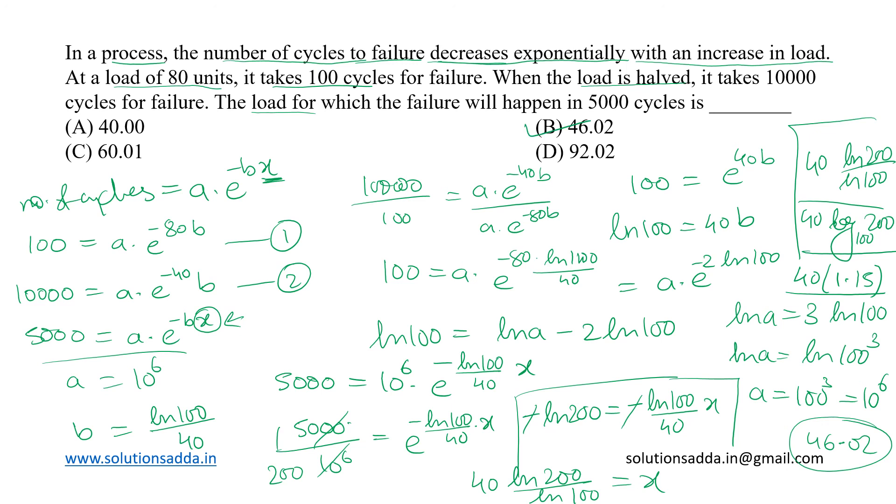When the load is 46.02 units, then the failure will take place in 5000 cycles. So our answer will be b, 46.02.